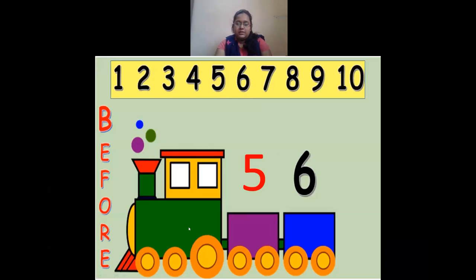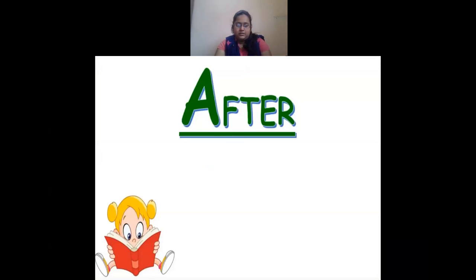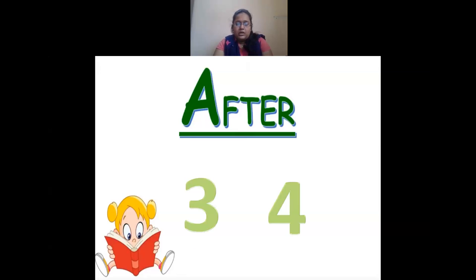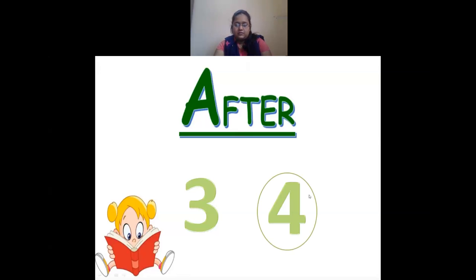So this is the meaning of before — the number that comes first is called before. Moving on to after: here I have 2 numbers, 3 and 4. What number comes at the end or second? First comes 3, then comes 4. So 4 comes after 3.